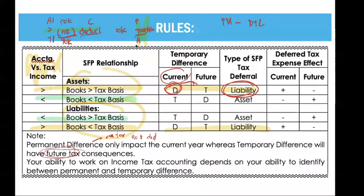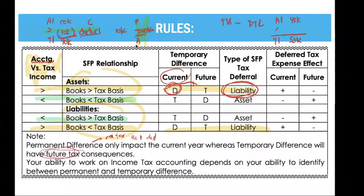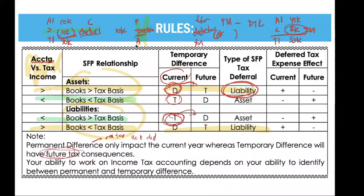What if the accounting income is lesser than taxable income? Let's say accounting income is $45,000 and taxable income is $53,000. To go from $45,000 to $53,000, you need to add — so in the current year, you tax it. To reverse it in the future, you decrease it, which represents a deduction. So you have a future deductible amount. In the current year you tax it; in the future you deduct it. A future deductible amount means you have a deferred tax asset.